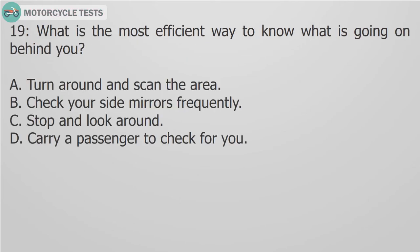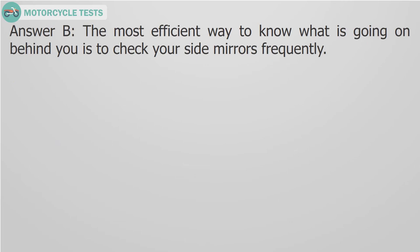Question 19. What is the most efficient way to know what is going on behind you? A. Turn around and scan the area. B. Check your side mirrors frequently. C. Stop and look around. D. Carry a passenger to check for you. Answer B. The most efficient way to know what is going on behind you is to check your side mirrors frequently.